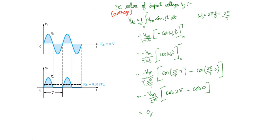Next, we will see the DC value — why the DC value of the input AC signal is 0. The DC value is nothing but the average value. How do you find the average value? You find the area from 0 to T, then divide by the time period T. So: (1/T) × integral from 0 to T of Vm·sin(ω₀t)·dt. The waveform is a sinusoid with Vm as peak, and ω₀ = 2πf = 2π/T.